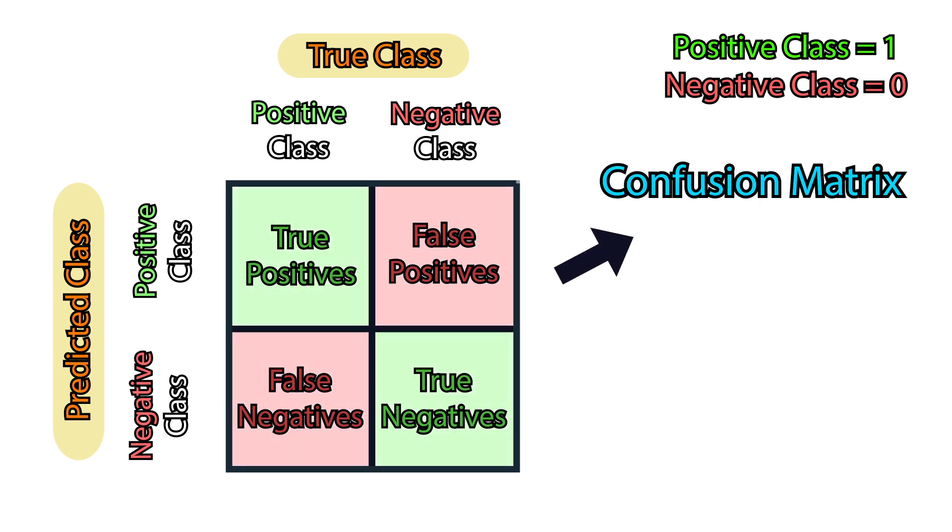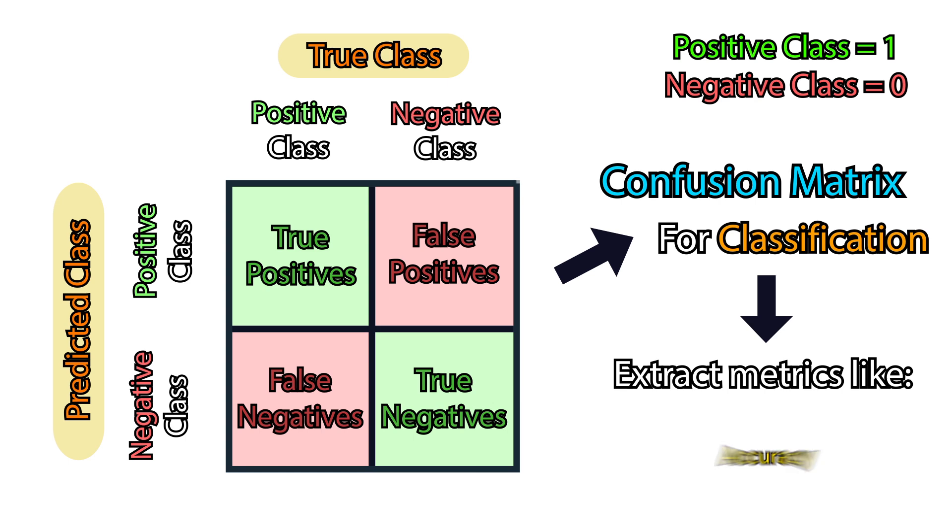This is called the confusion matrix, a popular metric used in classification tasks. From the confusion matrix, we can extract other metrics, like accuracy.